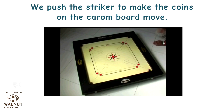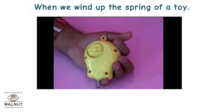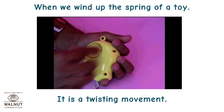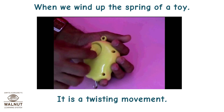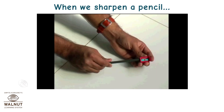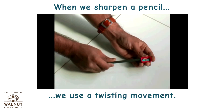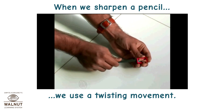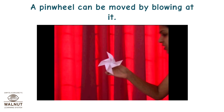We push the striker to make the coins on the carom board move. When we wind up the spring of a toy, it is a twisting movement. When we sharpen a pencil, we also use a twisting movement. A pinwheel can be moved by blowing at it.